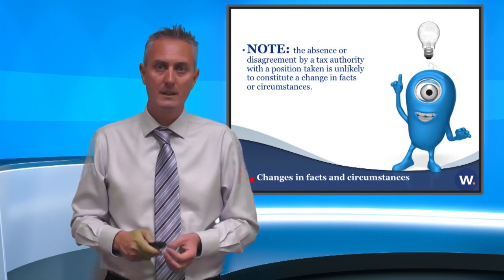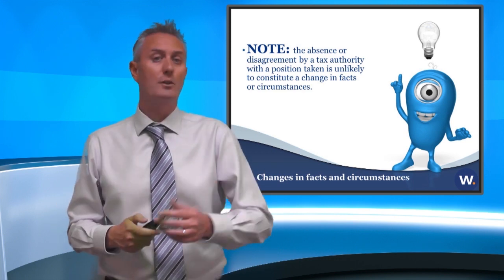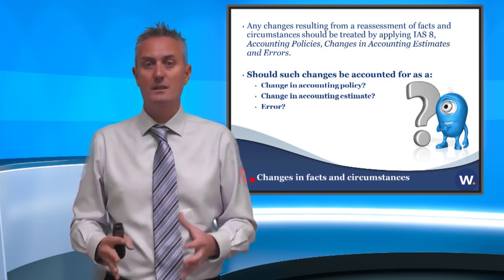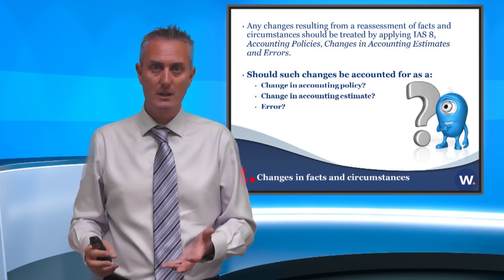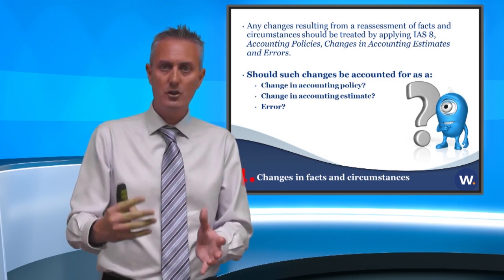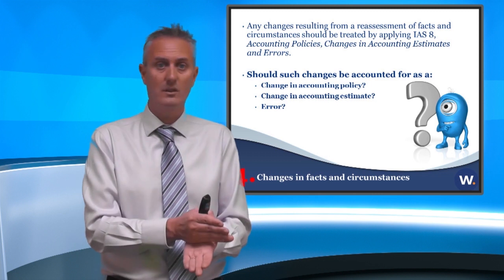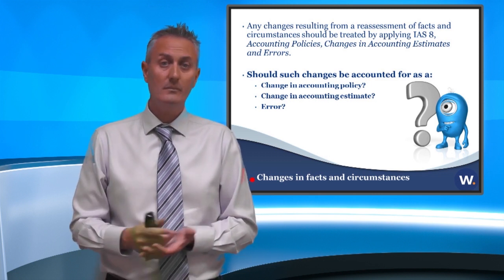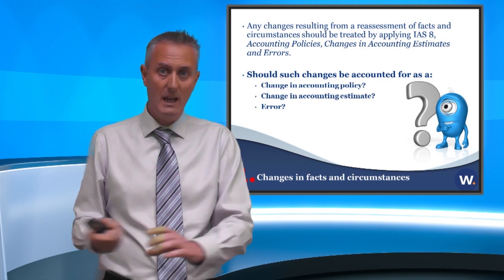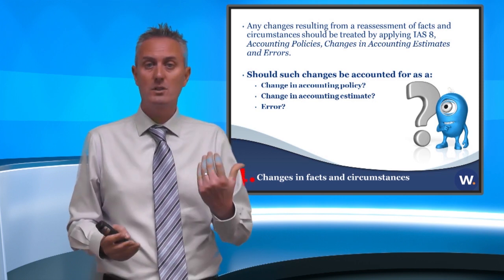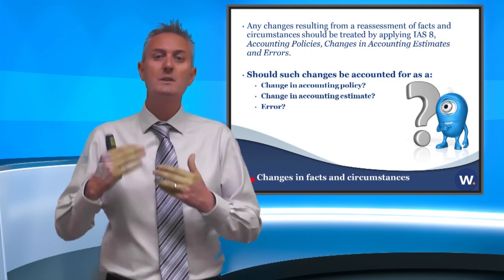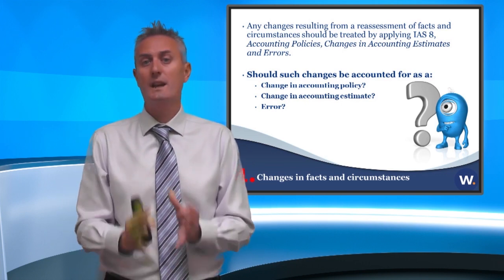If you have done any assessment and there is a change, how do you account for it? IFRIC 23 simply says you would look at IAS 8. Remember, IAS 8 looks at your changes in accounting policies, estimates, and errors. If in any year you look at the tax position from last year and amend it for a change in facts and circumstances, this is a change in accounting estimate — not a change in policy, because we've always recognised our tax, and not an error, because if we made the assessment last year with all the right facts it's not an error. Changes in estimates are all prospective, so you've made the adjustment only in the current year.